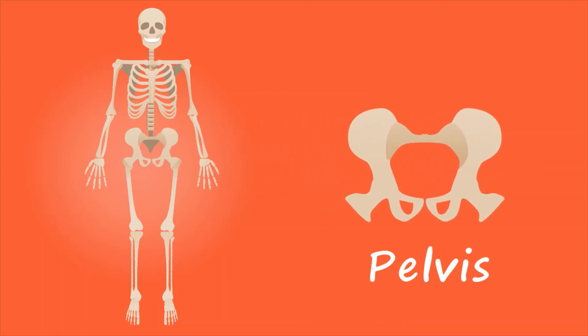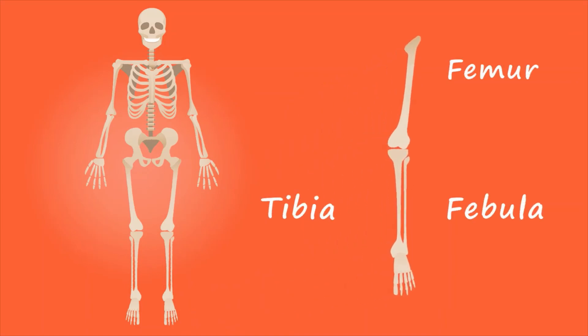The spine is our central support structure. The pelvis, which supports the spinal column. And the leg, which is made up of the femur, fibula, and tibia.